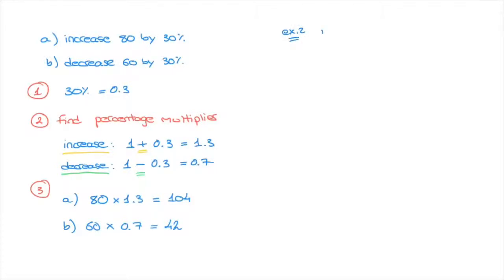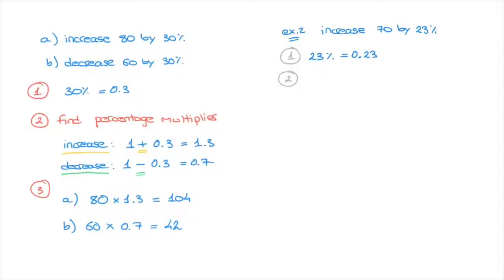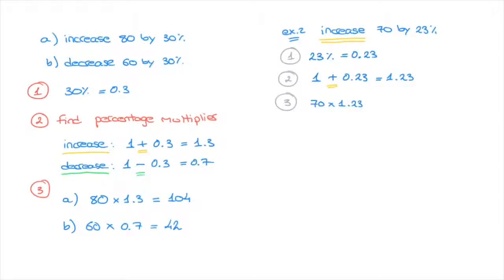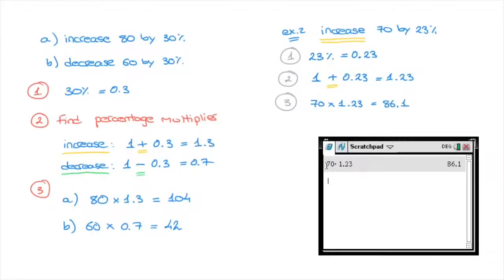Example 2: increase 70 by 23%. We follow the same three steps. Step 1 — express 23% as a decimal: 23 divided by 100 equals 0.23. Step 2 — find the percentage multiplier. Since we're dealing with an increase, the multiplier is 1 plus 0.23, which equals 1.23. We're adding 0.23 because we're dealing with an increase. Step 3 — multiply 70 by 1.23, which equals 86.1. That's the answer.